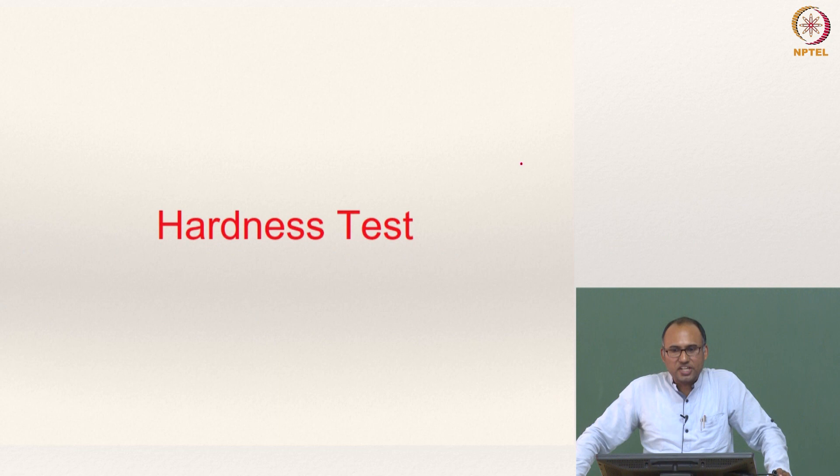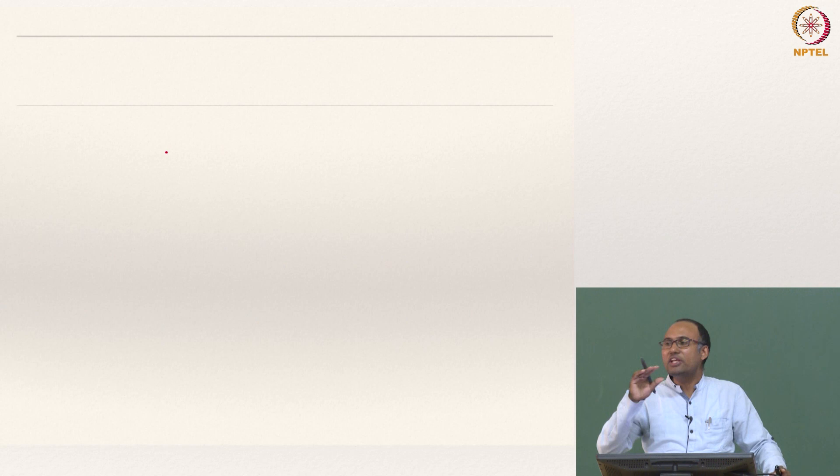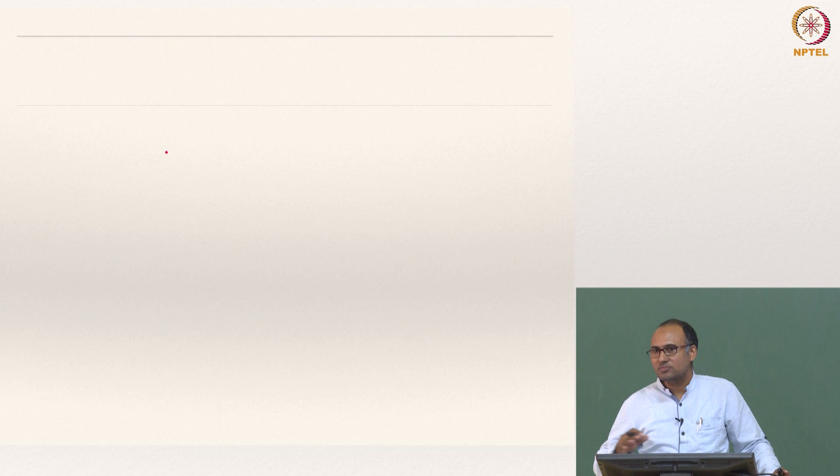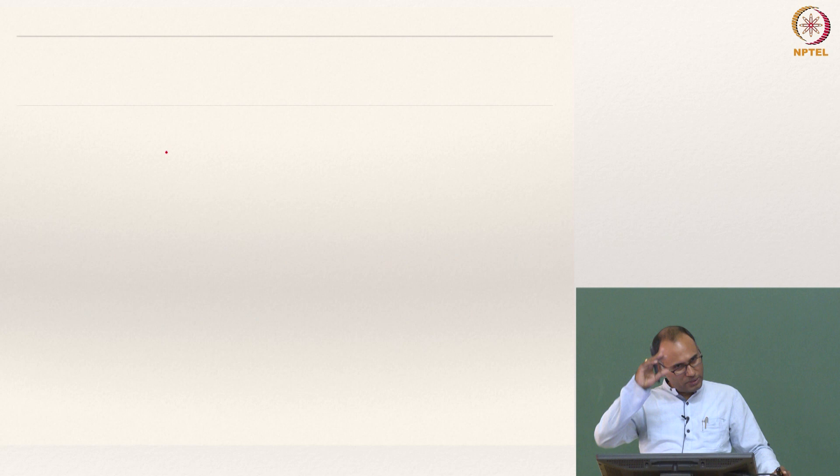That is about the tension test. I encourage all of you to actually read the chapter on the tension test from the textbook of Dieter — Mechanical Metallurgy by George E. Dieter. At the end of these slides, you have the name of the textbook. There is a chapter exclusively on the tension test. You get lots of information and insight into the reason why these curves are the way that they are. All the discussion that we had in class, you can reinforce by reading the chapter. It is about 30 to 40 pages, but it is really worth reading.